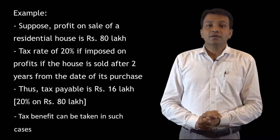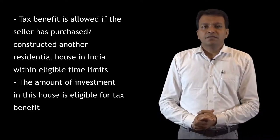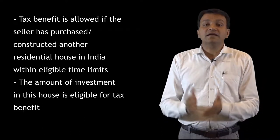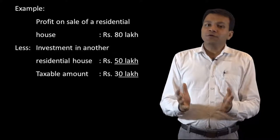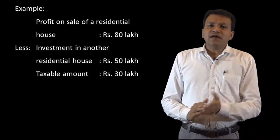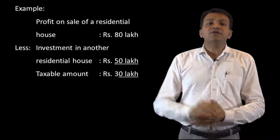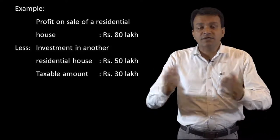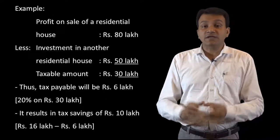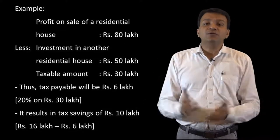On Rs 80 lakh I need to pay 20%, which is Rs 16 lakh as tax to the Government of India. But government gives a benefit — it says no need to pay this tax, provided I purchase another residential house property in India within some time limit. Whatever I invest in this new residential house property, I can save that much amount of tax. Suppose my profit is Rs 80 lakh and I invest Rs 50 lakh in a new house — my profit will be reduced to Rs 30 lakh, and I pay tax at 20% on Rs 30 lakh, which is Rs 6 lakh. Technically I have saved Rs 10 lakh in tax.